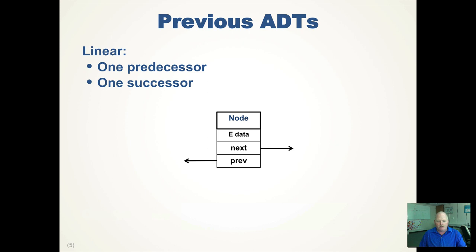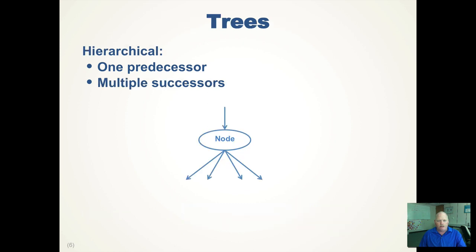Now we're going to introduce the next abstract data type, which is a hierarchical abstract data type in that nodes have one predecessor and multiple successors. A tree node has one predecessor and multiple successors. In this example, the node has four successors. We'll be talking later about a specific kind of tree, but the general tree can have more than one successor node.